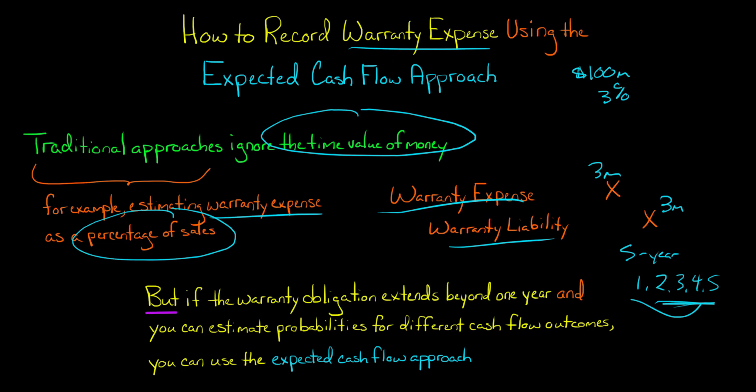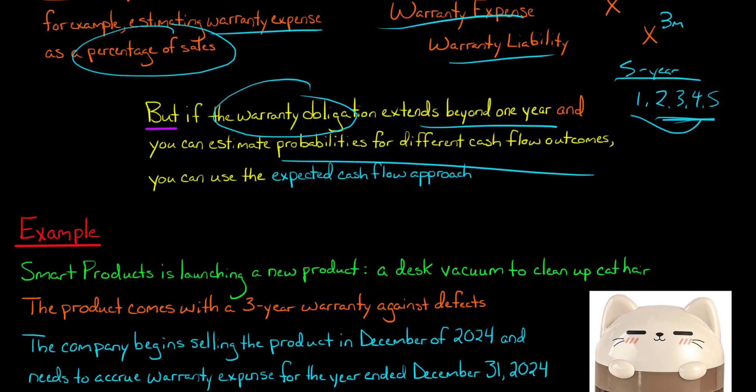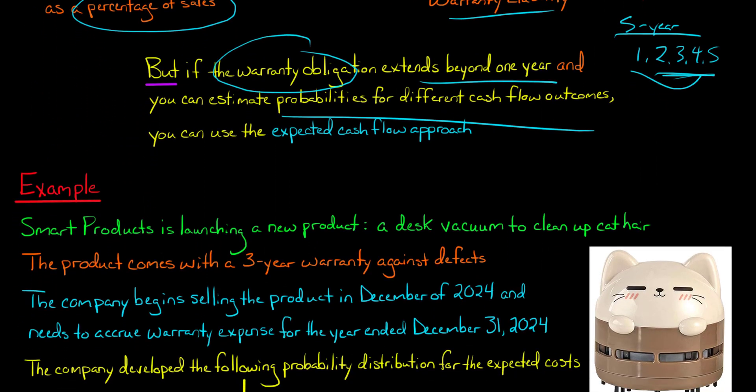So if the warranty obligation extends beyond one year — like a three-year warranty or a five-year warranty — and you can estimate probabilities for the different cash flow outcomes, you can use the expected cash flow approach that I'm about to show you. So let's jump into an example.